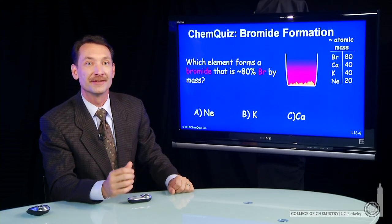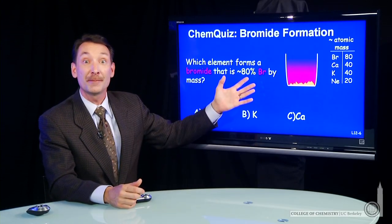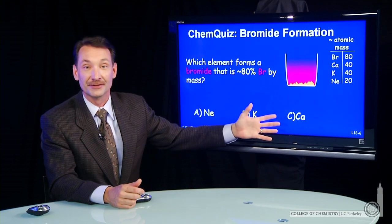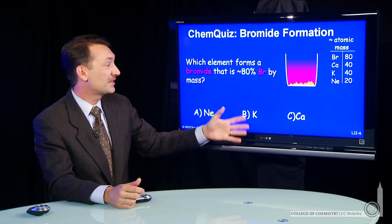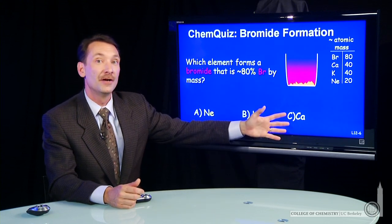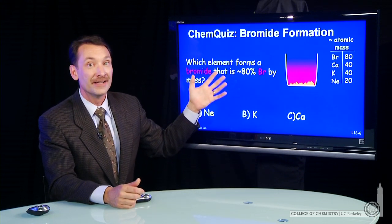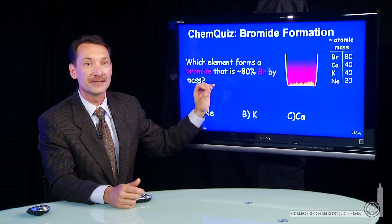Let's look at the formation of some ionic bonds. Bromine will form ionic bonds with several atoms. Now the question is, of the following atoms, neon, potassium, or calcium, which will form a bromide that's 80% bromine by mass?